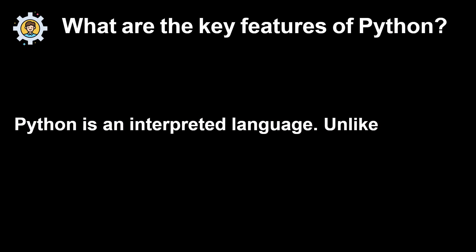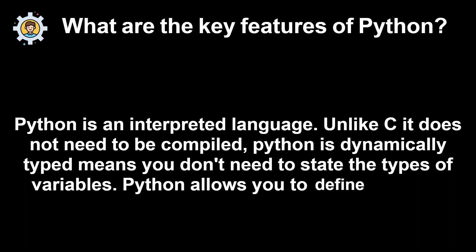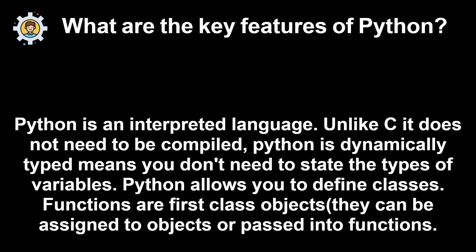What are the key features of Python? Python is an interpreted language. Unlike C, it does not need to be compiled. Python is dynamically typed means you don't need to state the types of variables. Python allows you to define classes. Functions are first class objects that can be assigned to objects or passed into functions.